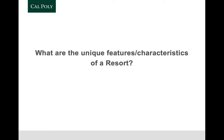Let's start with resorts, and I'll flip this back to you for class discussion. Some of you have had this before, so we'll try to do it a little differently. Think about the unique features and characteristics of a resort — not necessarily a destination resort, but any resort, whether in Pismo Beach, Hawaii, or elsewhere. There's a questionnaire associated with this flipped classroom that all of you should complete, which will feed into our class discussion.